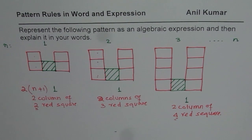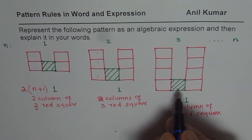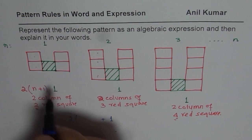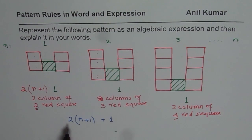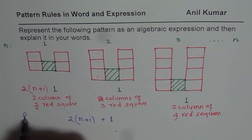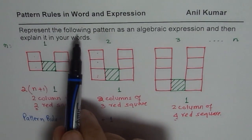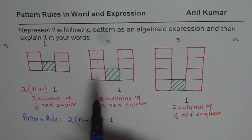Do you see how we arrived at an expression? Let's go through it once again. What we are saying is that we have one fixed green, plus we have two columns of red squares which are n plus one — one more than the figure number. So that becomes our pattern rule, an algebraic expression which represents the number of squares.